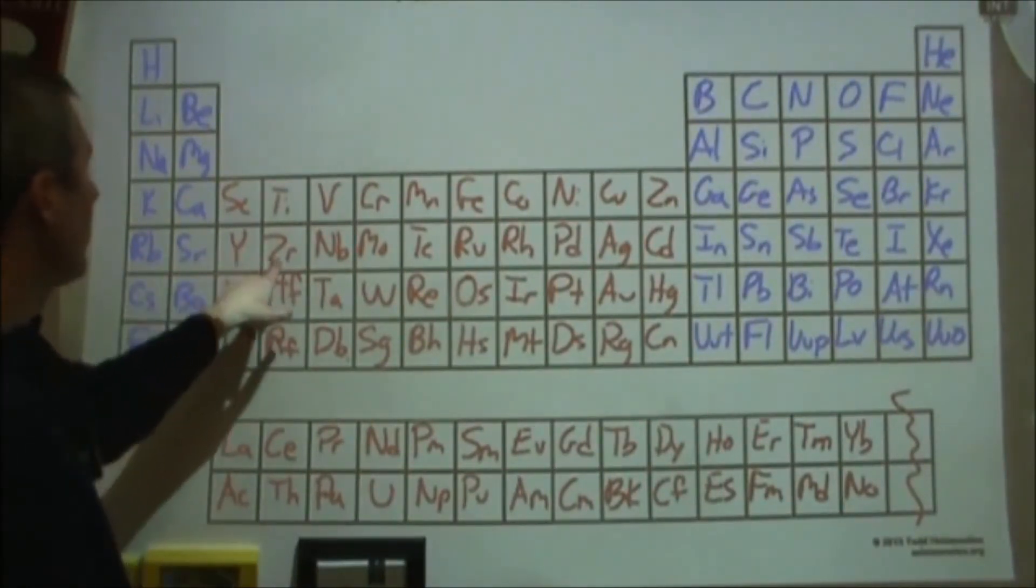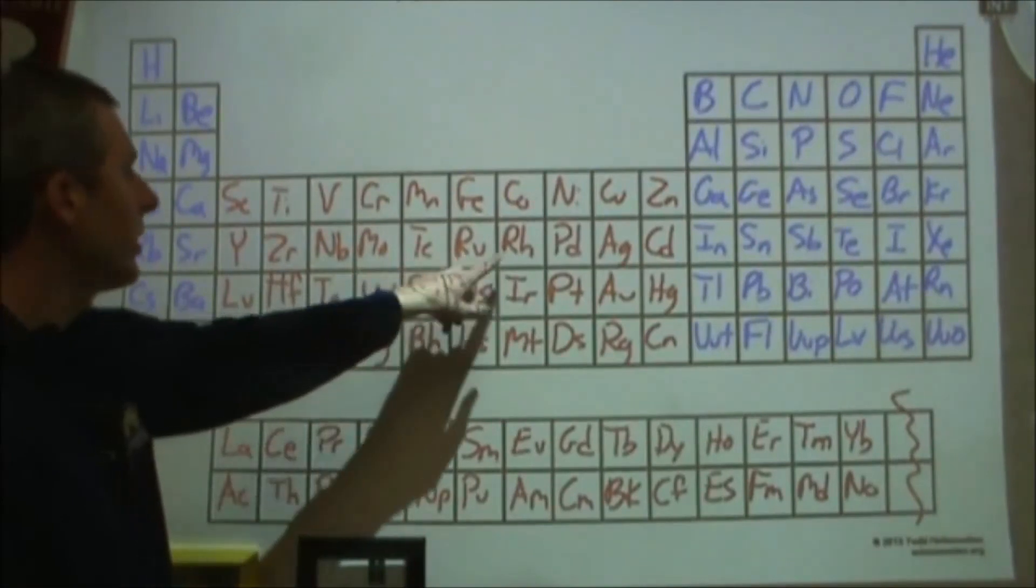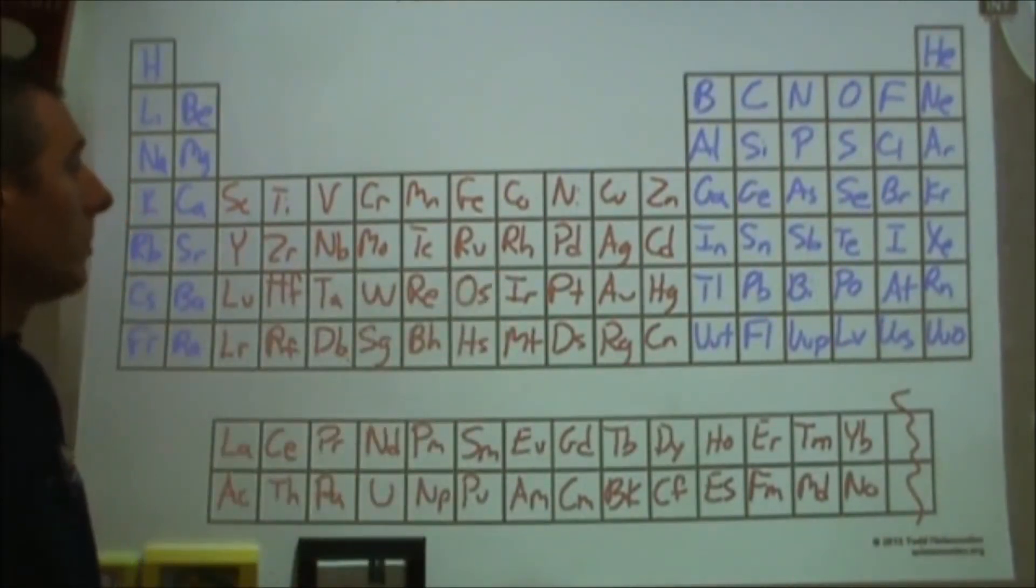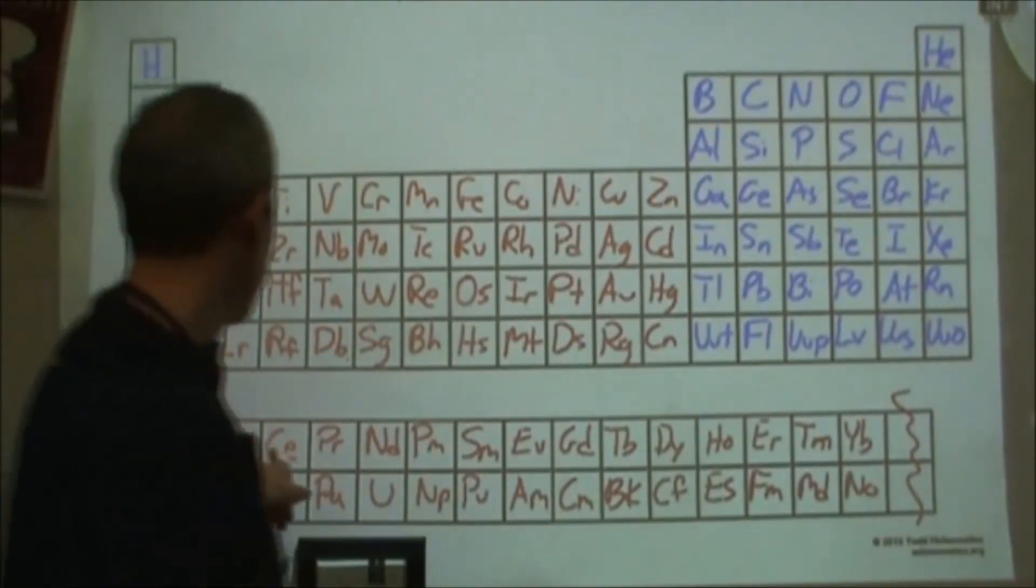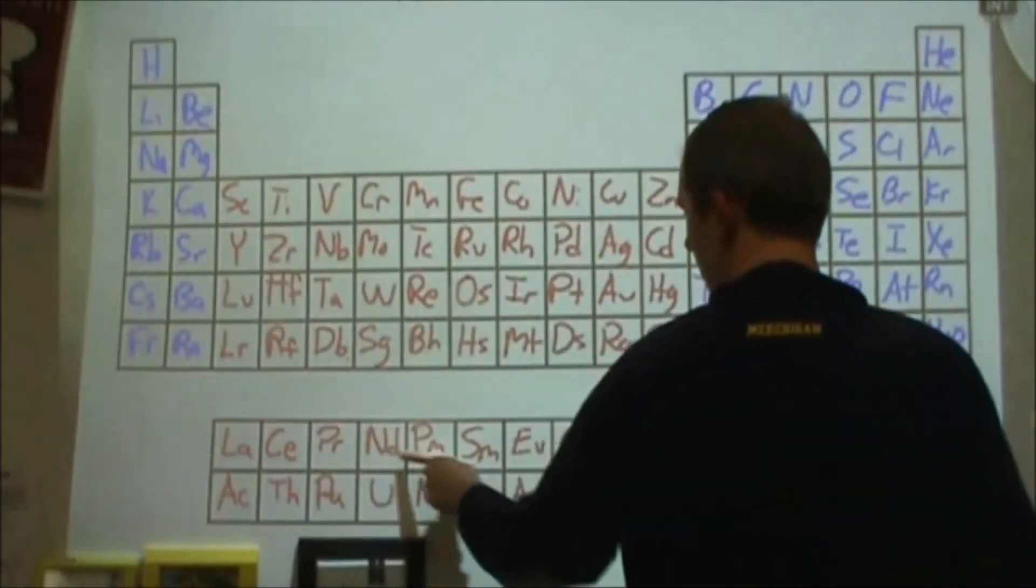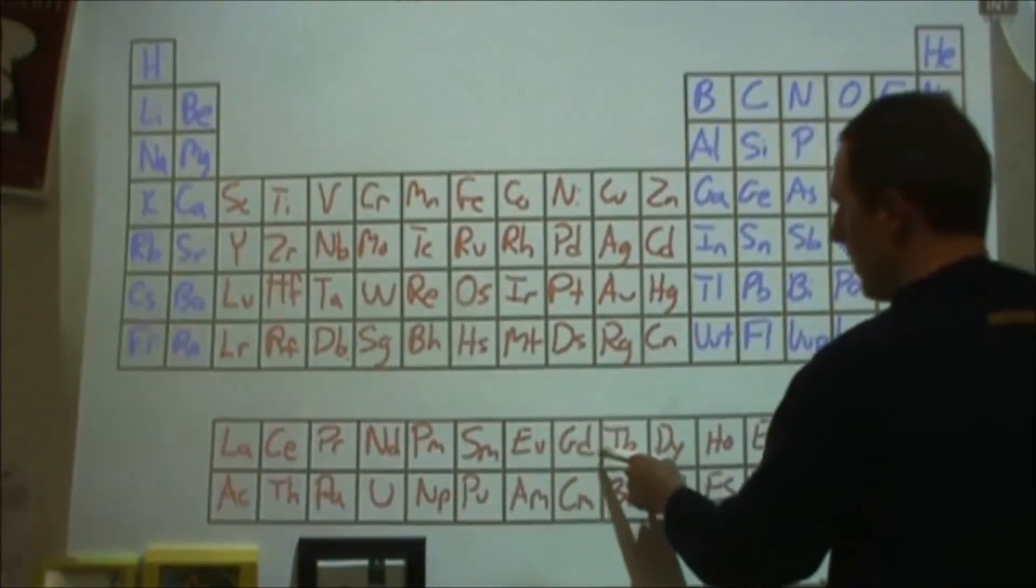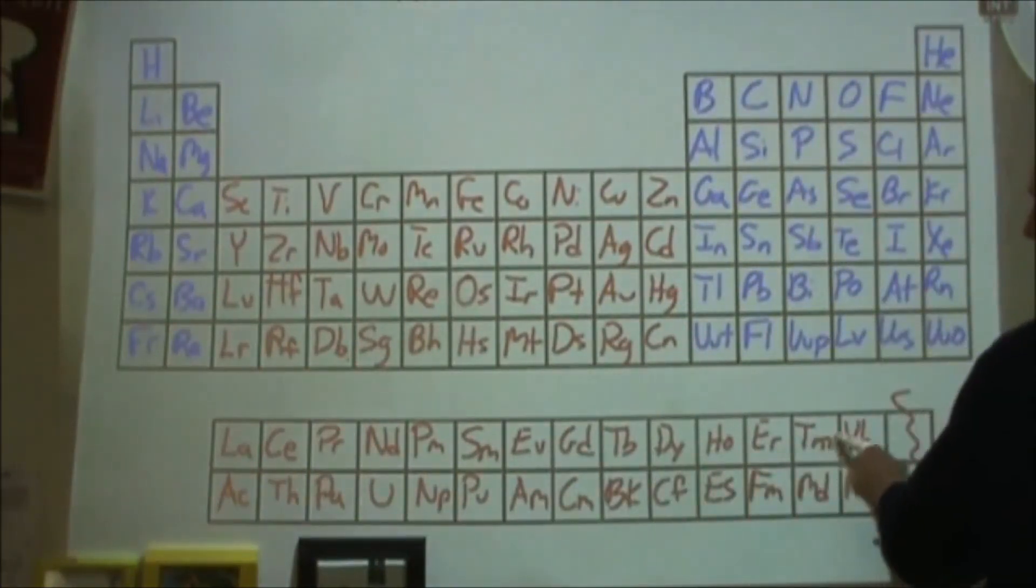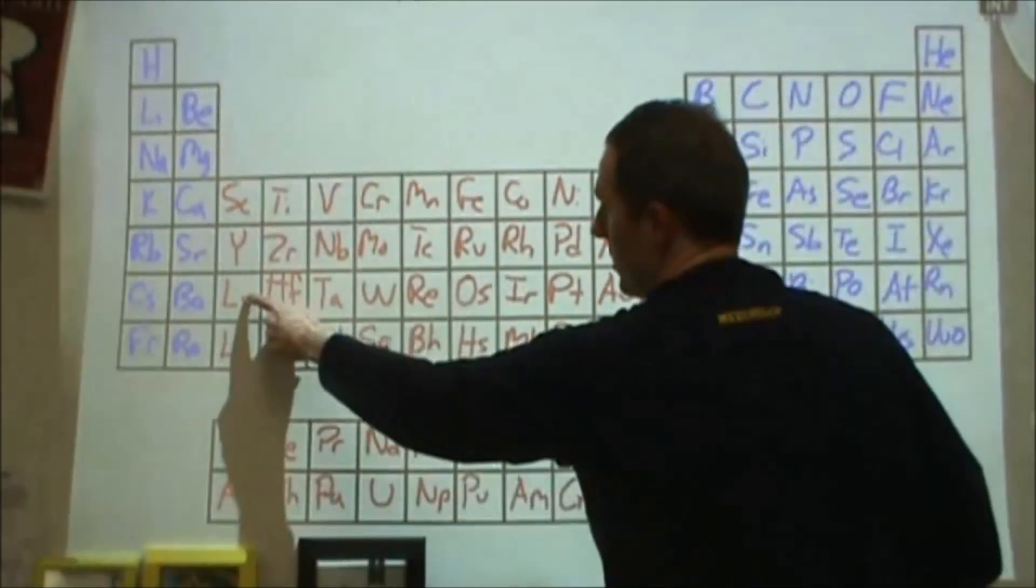Rubidium, strontium, yttrium, zirconium, niobium, molybdenum, technetium, ruthenium, rhodium, palladium, silver, cadmium, indium, tin, antimony, tellurium, iodine, xenon, cesium, barium, lanthanum, cerium, praseodymium, neodymium, promethium, samarium, europium, gadolinium, terbium, dysprosium, holmium, erbium, thulium, ytterbium.